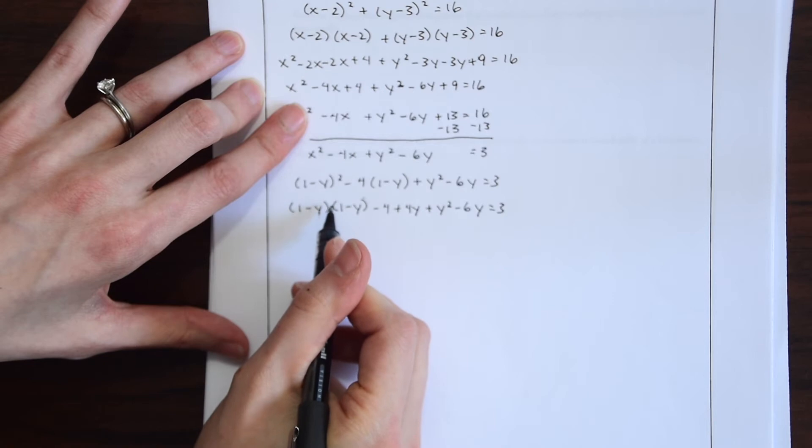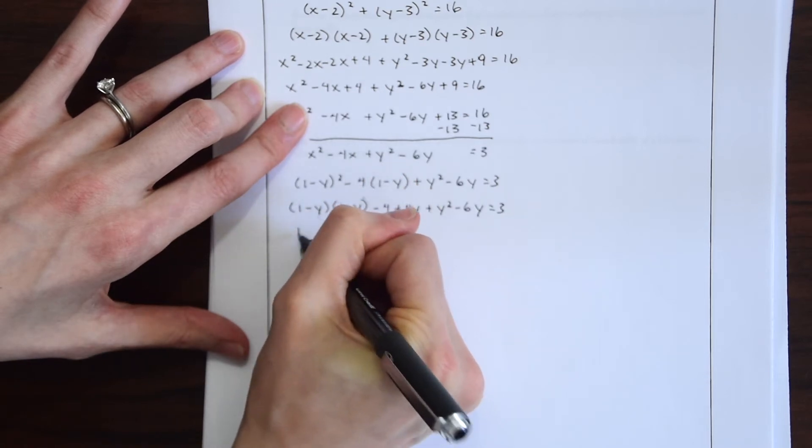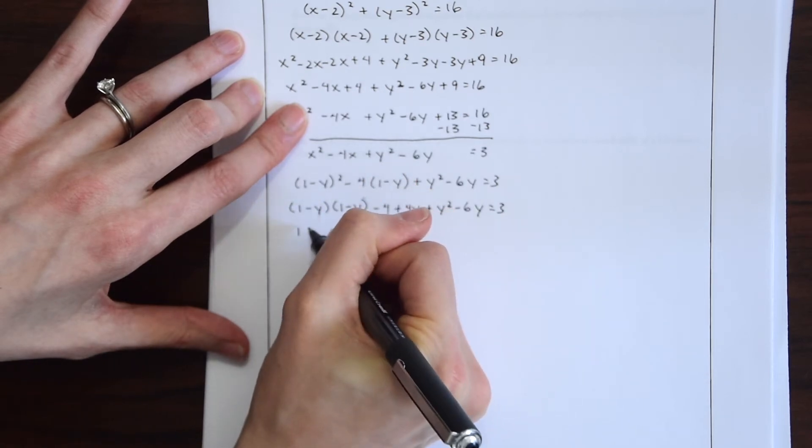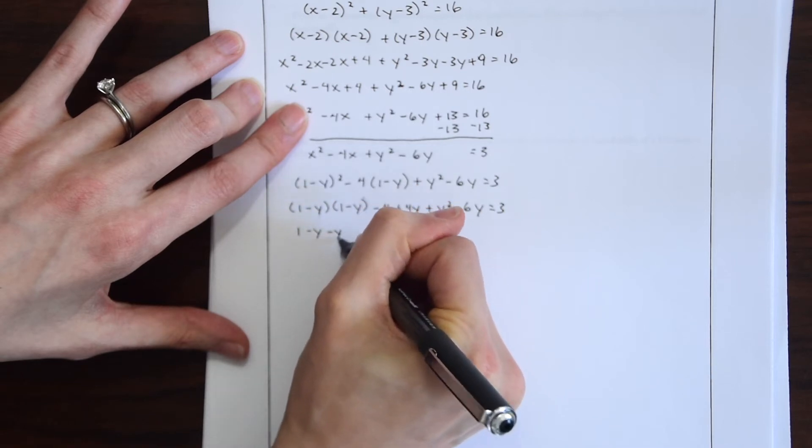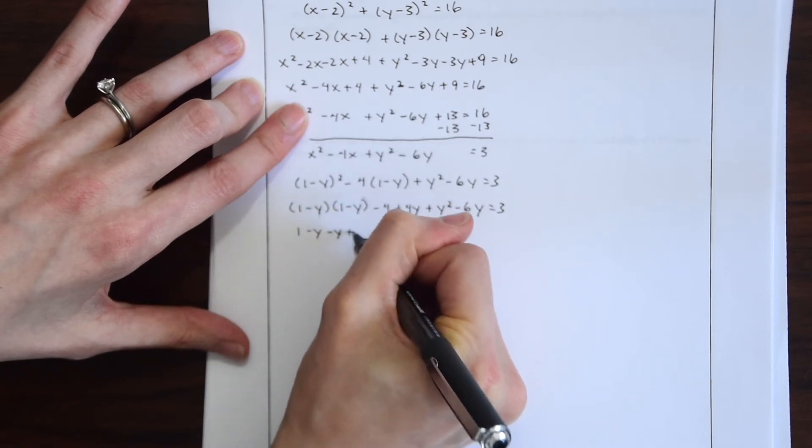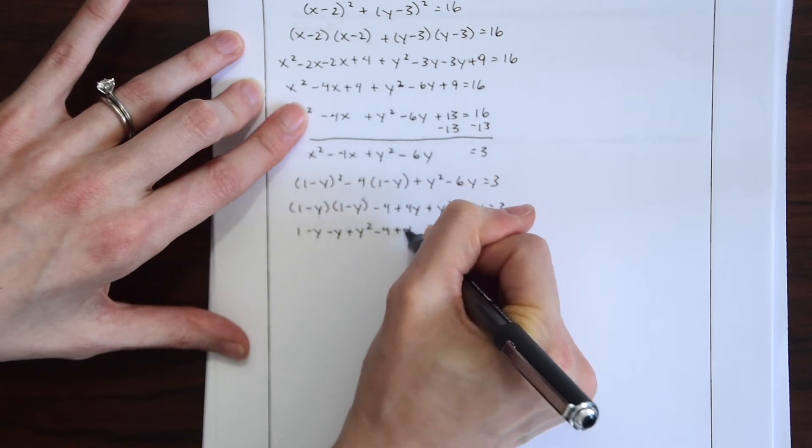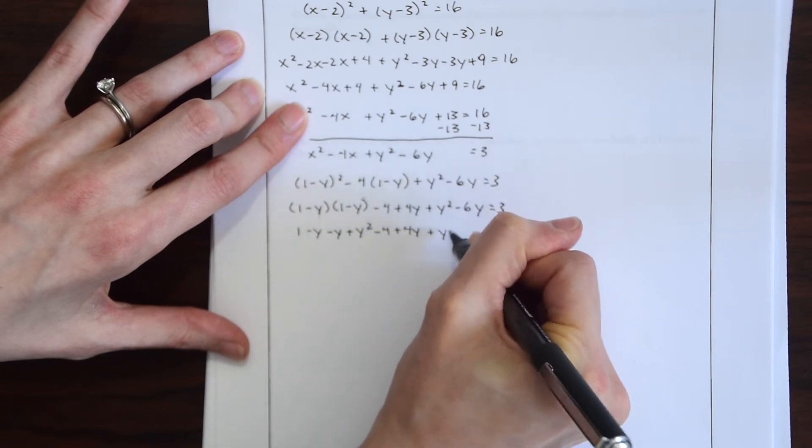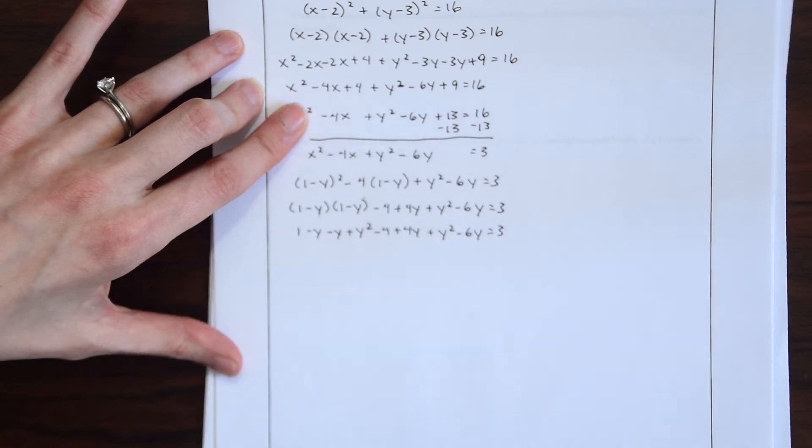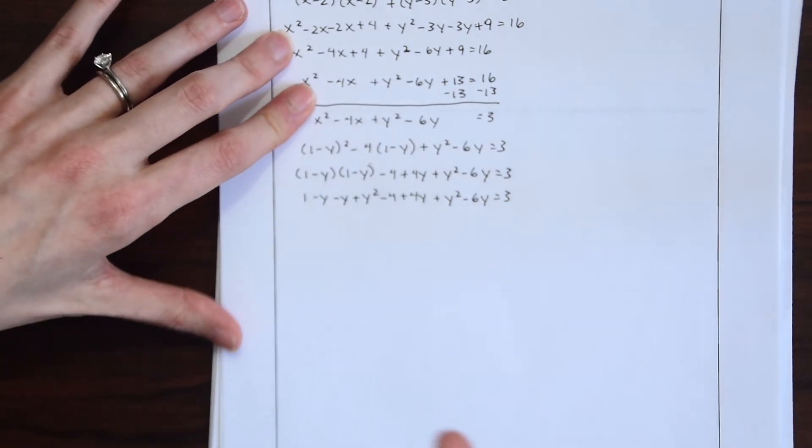And now let's distribute this 1 times 1 is 1. 1 times negative y minus y another minus y plus y plus y squared. And then now we're just bringing down the rest of this. Okay. Next.